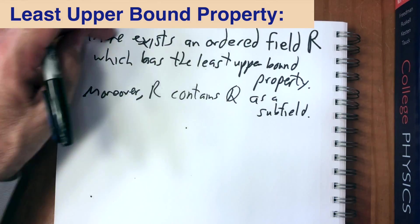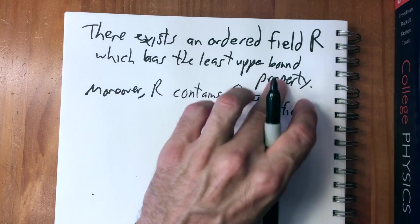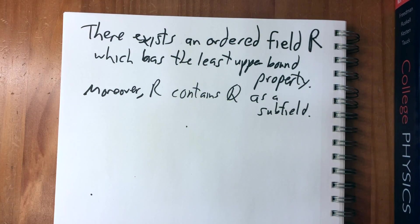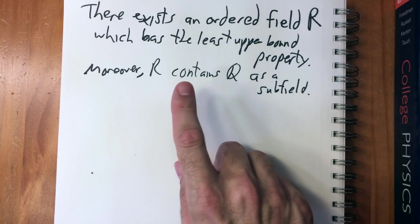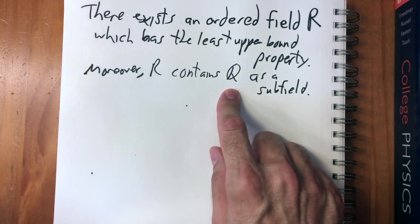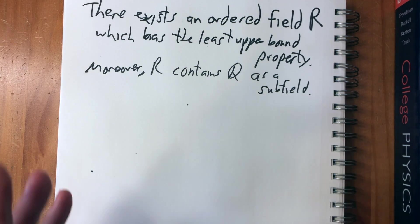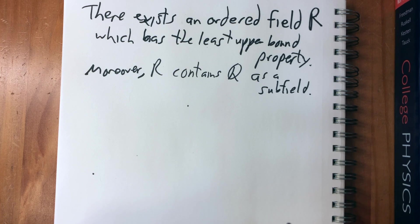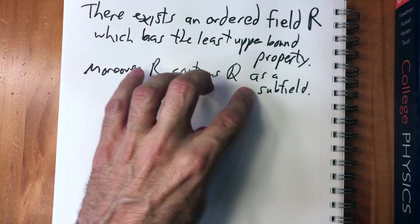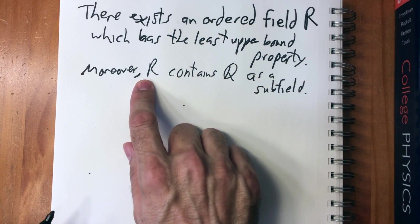This is just an amazing thing — the least upper bound property is the only difference between the rationals and the reals. Because of the lack of this property, the rationals contain gaps, and by simply adding the least upper bound property we're going to fill in those gaps. The statement that R contains Q as a subfield means that addition and multiplication in the reals, when applied to rationals, coincide with the usual rational operations, and that positive rational numbers are the positive elements of the reals.